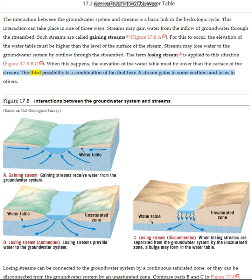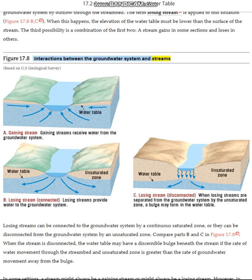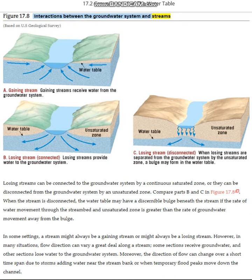The third possibility is a combination of the first two: a stream gains in some sections and loses in others. Figure 17.8 illustrates the interactions between the groundwater system and streams, based on U.S. Geological Survey data.